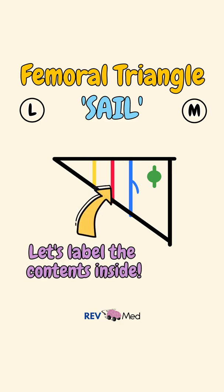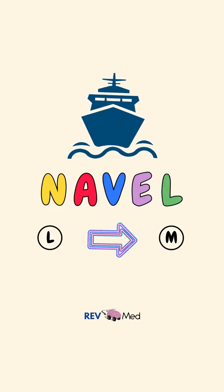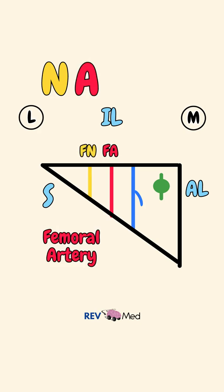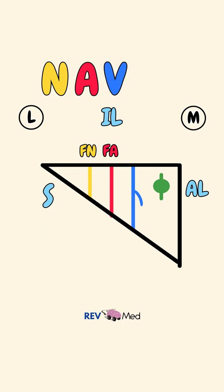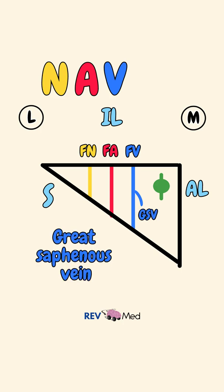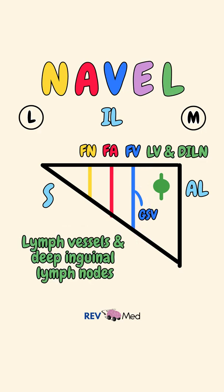Now let's go inside the sailboat to label the contents with another mnemonic — NAVEL, from lateral to medial. N for the first one: femoral nerve. Medial to it is A for the femoral artery. Medial to that is V for the femoral vein, and its tributary, the great saphenous vein. Next is E for the empty space — nothing is actually shown here. L is for the lymph vessels and deep inguinal lymph nodes.